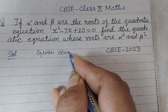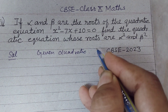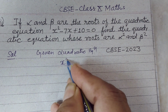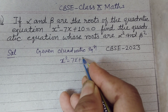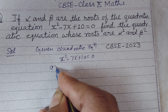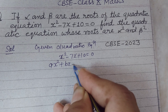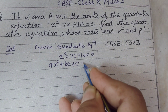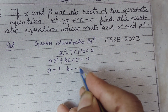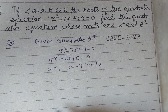The given quadratic equation is x squared minus 7x plus 10 equal to 0. Comparing it with the standard form ax squared plus bx plus c equal to 0, here a is 1, b is minus 7, and c is 10.